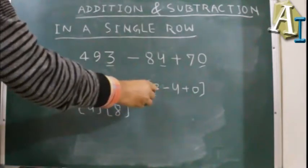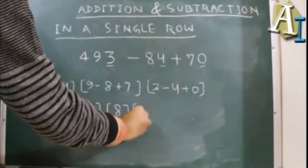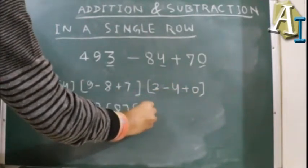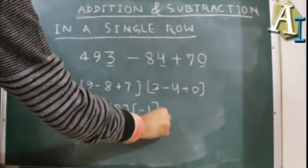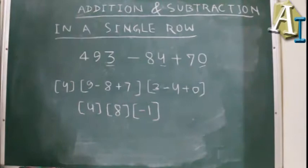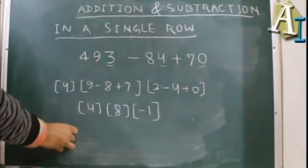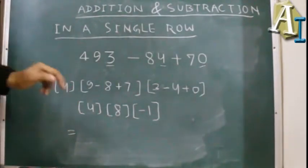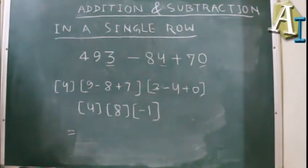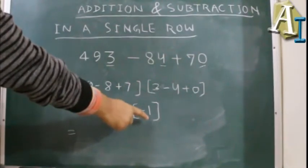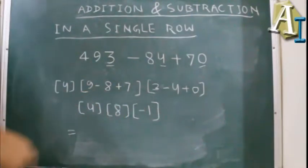And then we have 3 minus 4 is minus 1, minus 1 plus 0 is minus 1. Now our aim is to get only positive numbers here. We got one negative number, so we will convert it to a positive number.